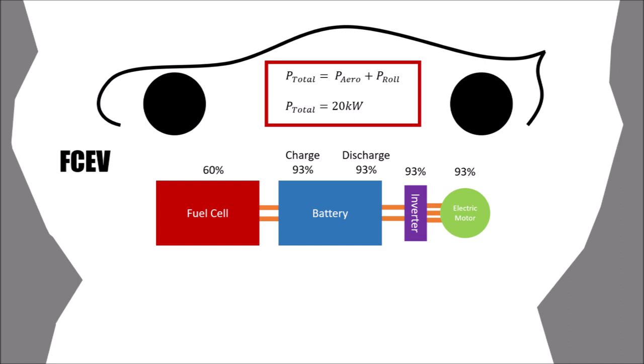Let's assume the fuel cell has a very good efficiency of 60%, and we assume 93% for charging the battery and keep the same efficiencies for the following components like the electric car. That results in an overall efficiency of 45% from the fuel cell to the motor shaft. There is a boost function for fuel cell cars where the battery is bypassed and the fuel cell is driving the electric motor directly. The efficiency for that would be 52%.